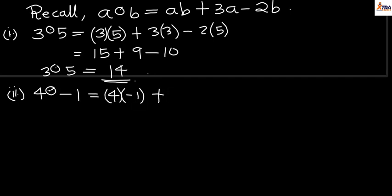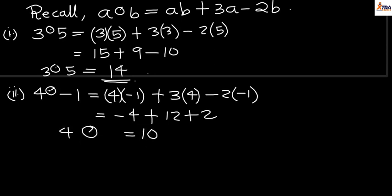So I'll have 4 times -1 plus 3 times 4 minus 2 times -1. This gives me -4 plus 12 plus 2. 12 minus 4 gives me 8, and 8 plus 2 is 10. That means that 4○-1 will give me a value of 10.